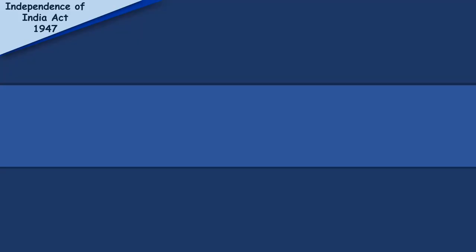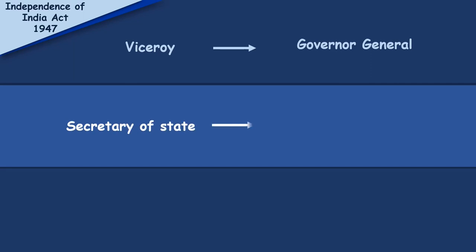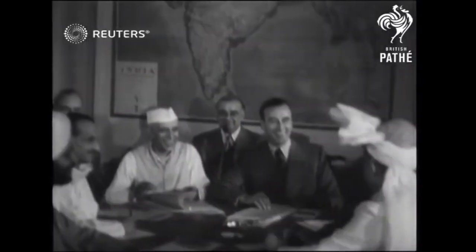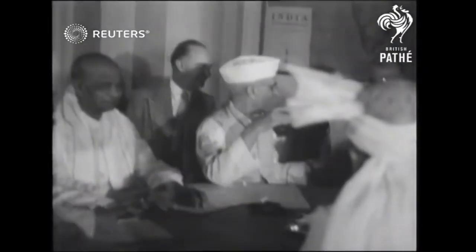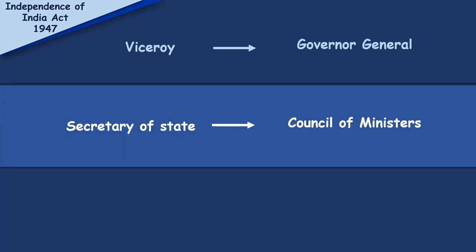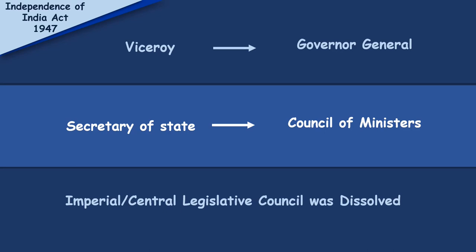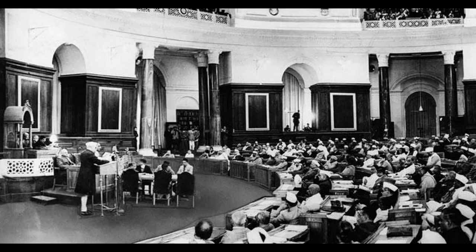According to the Independence Act, the Viceroy became the Governor General of India. This act also abolished the position of Secretary of State, and all his powers were given to the interim government. From now onwards, it was mandatory for the Governor General of India to follow the advice of the Council of Ministers led by Jawaharlal Nehru. Finally, by this act, the Imperial or Central Legislative Council was dissolved, and the Constituent Assembly of India functioned as our first parliament.